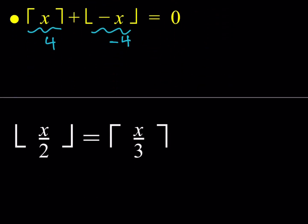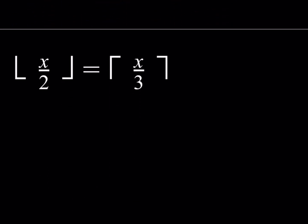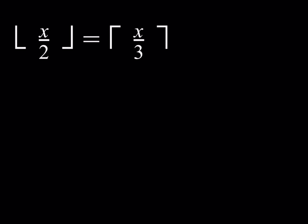Given those definitions, let's take a look at this problem. We have the floor of x over 2 equal to the ceiling of x over 3. As almost always, we're going to set this equal to an integer n. We know that n is an integer, and we're going to try to solve for possible values of n. Our goal is to find x, but we also need to know our boundaries for n.